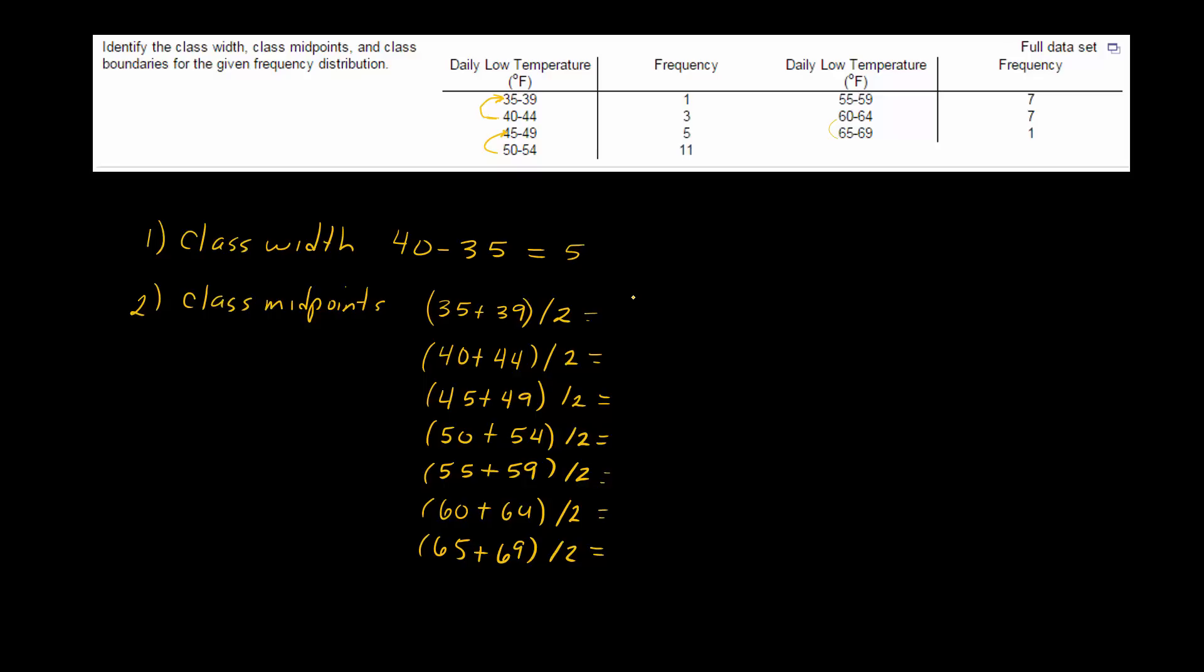So this becomes 37, this becomes 42, this becomes 47, this becomes 52, this is 57, this one is 62, and then finally this one becomes 67.